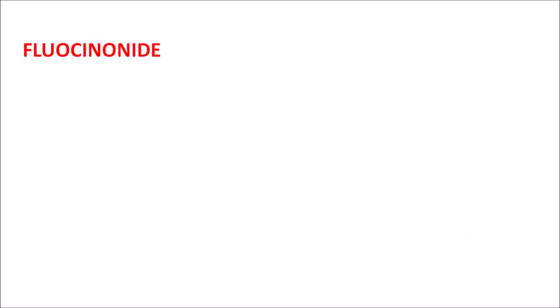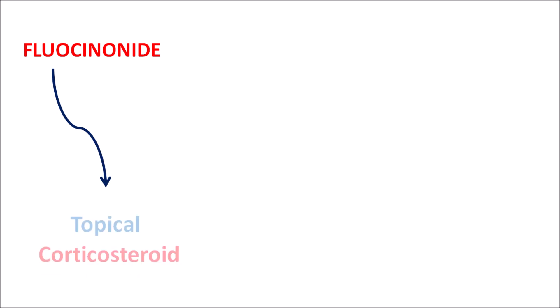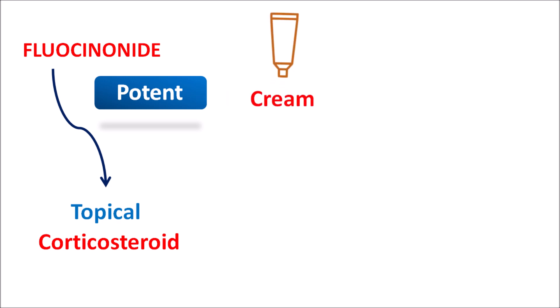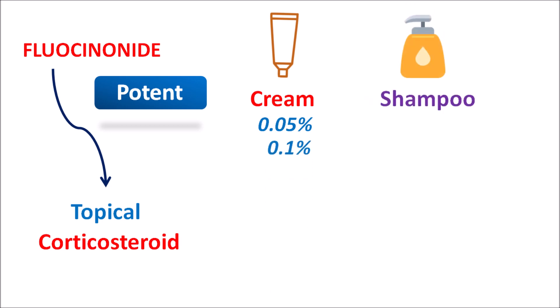So what is this drug fluocinonide? This drug is a topical corticosteroid. That's why it acts as an anti-inflammatory agent, and this is one of the potent glucocorticoids which should be carefully used. This drug is available as a cream at a strength of 0.05% as well as 0.1%. It is also included in medicated shampoos where it produces anti-inflammatory action, thereby reducing scabies and other inflammatory disorders.